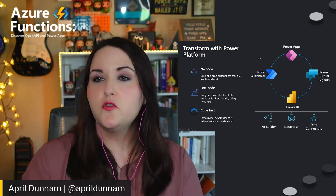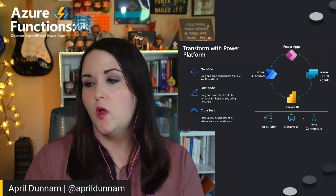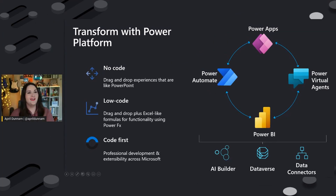All of the Power Platform tools share a few things in common. First is Dataverse — that is the Power Platform's database and data model that it uses to store data. Then we have AI Builder, a low code way of adding AI into your applications. We have prebuilt models for object detection, form processing, prediction, and category classification. And finally, what we're going to be focusing on today — data connectors. These are the building blocks that allow us to connect services into the Power Platform.